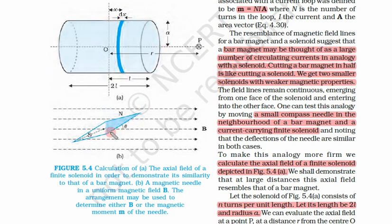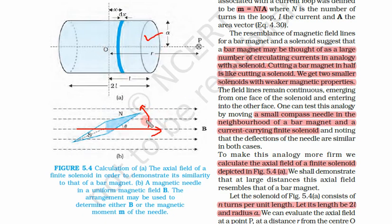Suppose we put a compass needle just near the solenoid. A compass needle in the neighbourhood of a bar magnet and a current-carrying finite solenoid will both show deflection. If we put a magnet nearby, the needle deflects; in the presence of a solenoid it will also deflect. In both cases the deflections of the needle are similar. In all these ways we have understood that a solenoid is equivalent to a bar magnet.